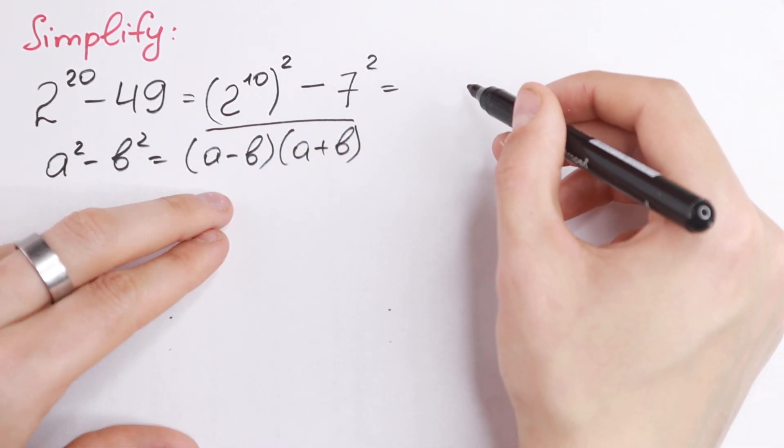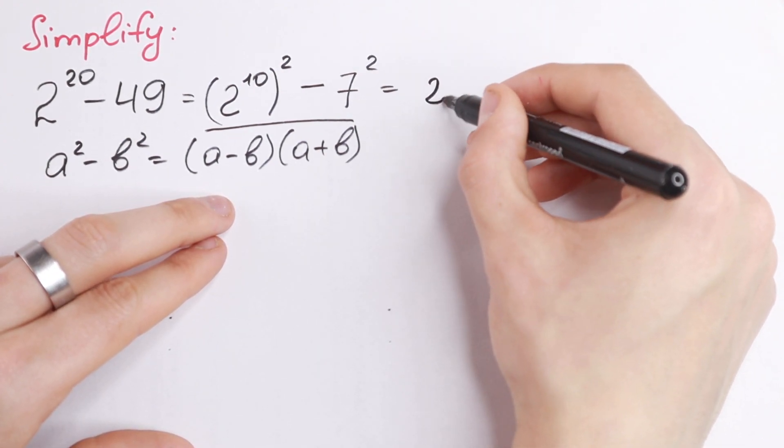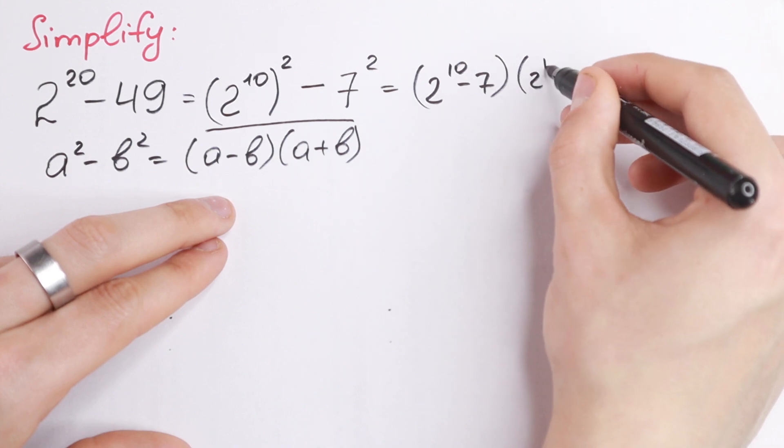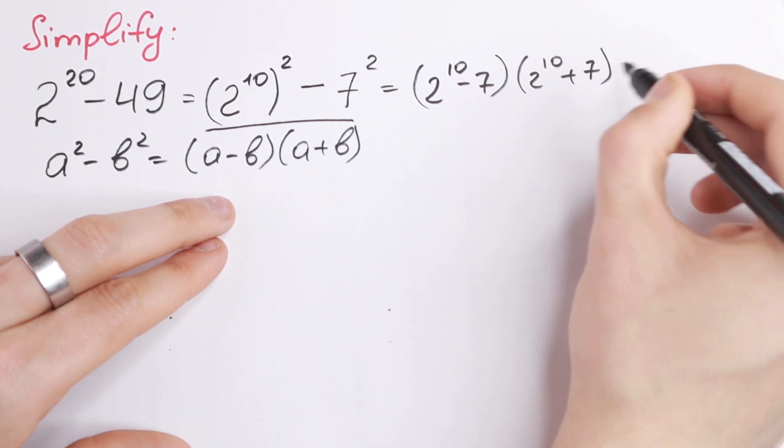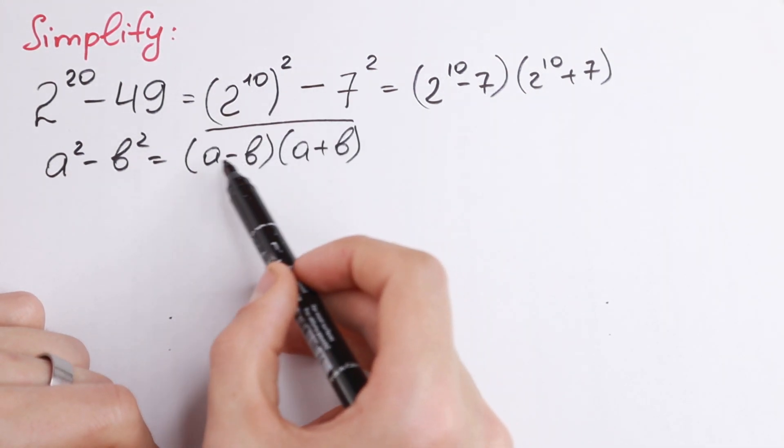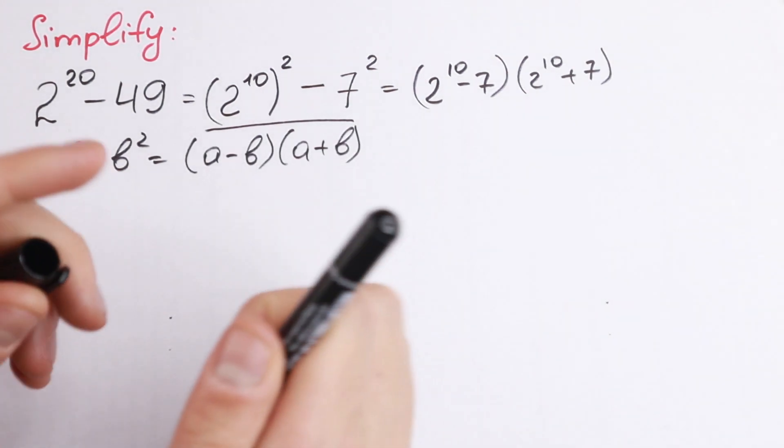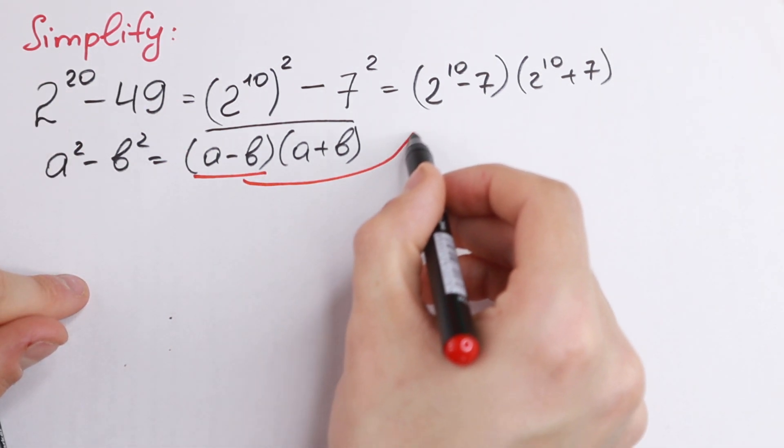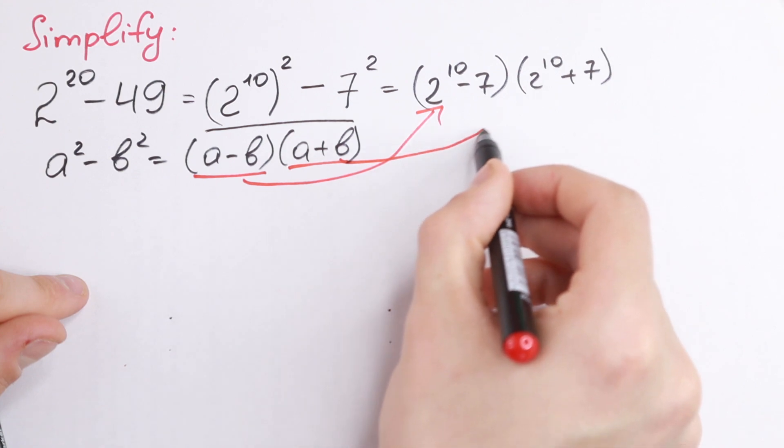Just write this using this formula. We will have 2 to the 10th power minus 7 times 2 to the 10th power plus 7. So just using this formula, this is our a, 2 to the 10th power is our a and 7 is our b. So just split it into an identity. This is a minus b and this is a plus b.